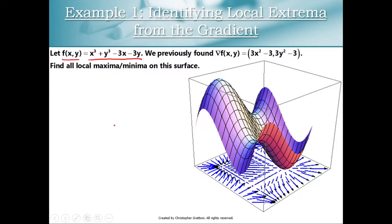We've actually seen this surface in a previous video. We already computed the gradient vector for this equation — we got (3x² - 3, 3y² - 3) — and my job in this problem is to find all local maxes and mins on the surface. I want the point on the upper left, the point on the lower right, and along the way we'll also end up finding some interesting points that are neither maxes nor mins, called saddle points.